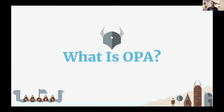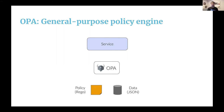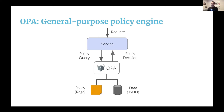What is OPA? OPA, the Open Policy Agent, is an open source general purpose policy engine. When you use OPA, you are decoupling the policy decision making from the policy enforcement, so your services can offload queries to OPA for a policy decision. Whenever your service gets a request, it asks OPA for a policy decision by executing a query. OPA evaluates that query based on the policy and data it has access to, and sends the decision back to your service where it gets enforced.